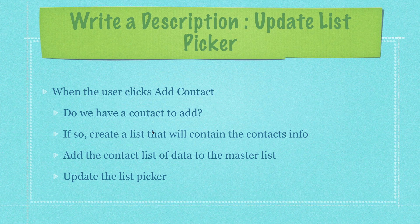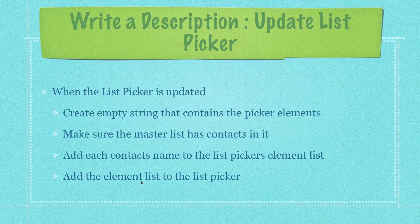When the user clicks Add Contact, we want to check that we have a contact's name inside of the text box. If so, we want to create a list that will contain the contact's information, then add that contact list of data to our master list and update our list picker. When updating the list picker, we create an empty string to contain the picker elements — a string that's just a list of items separated by commas. We then verify the master list has contacts, cycle through it, and put each contact's name into that string.